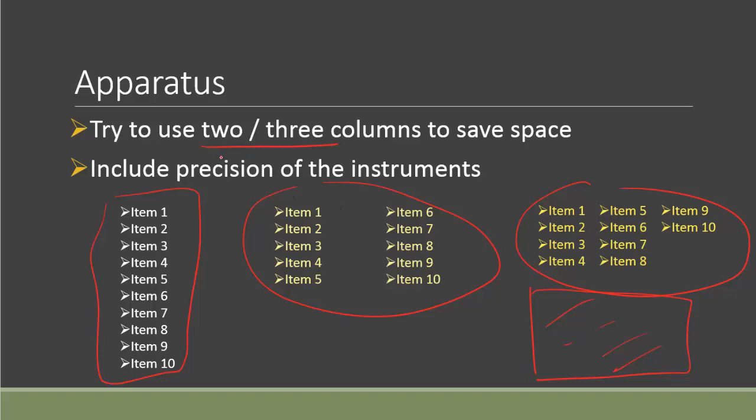The next thing I'll recommend is if you have any instrument, for example simply a ruler, try to put the precision as well. So let's say the ruler is plus or minus 0.5 mm. There's no harm to put a bracket and put on the precision of it, or maybe an electronic balance and a bracket plus or minus one gram. That would be helpful and show to the marker that you pay attention to the precision.